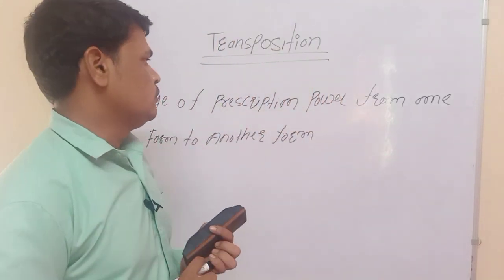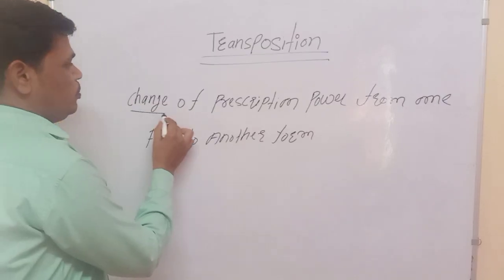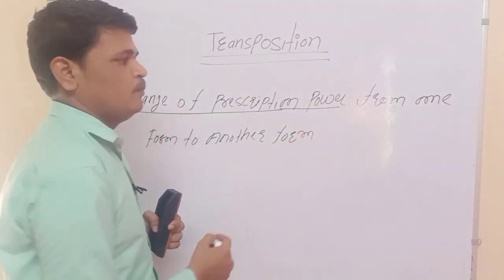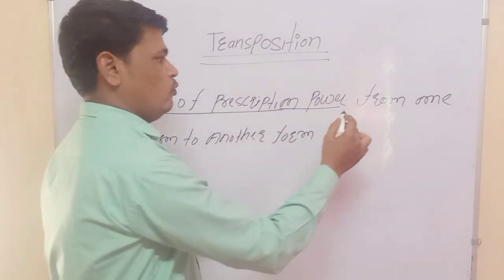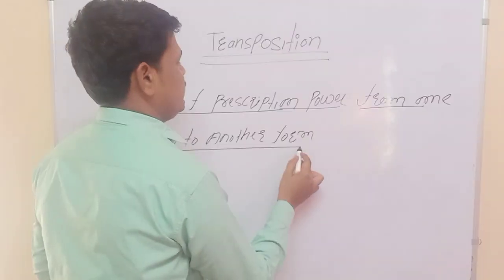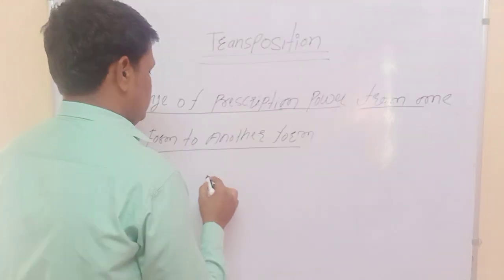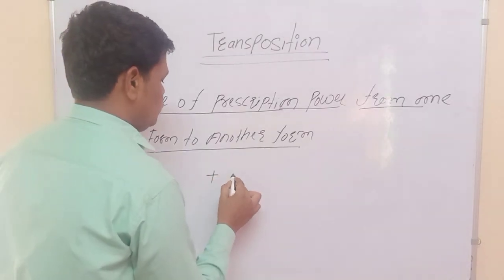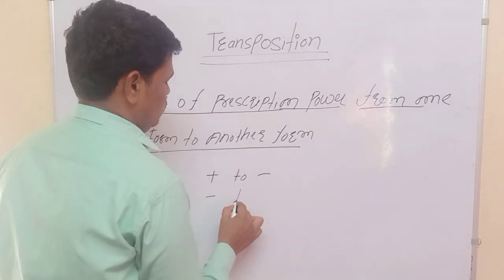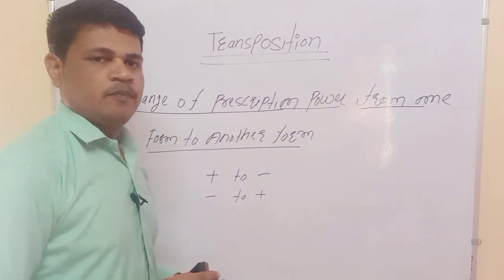What is a transposition? Transposition is a change of prescription power from one form to another form — it is called a transposition. In simple language, suppose plus form to minus form, or minus form to plus form, is called transposition.